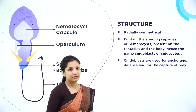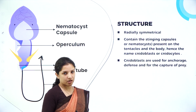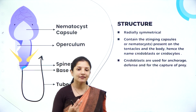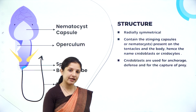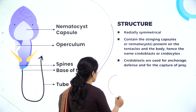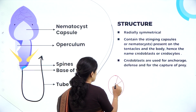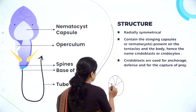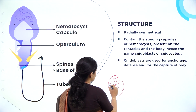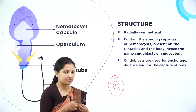Talking about the structure of the cnidarians or the coelenterates — they are radially symmetrical. What is radial symmetry? Just imagine a cake. When you cut a cake from the center, you draw points from the center like this — this half is similar to this half. So one half is similar to the other half. That is called radial symmetry.